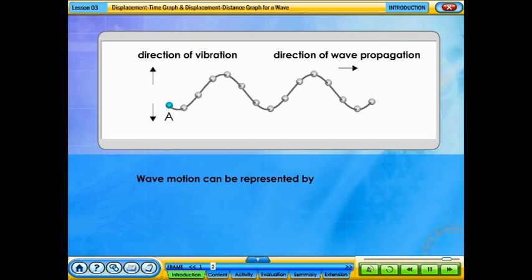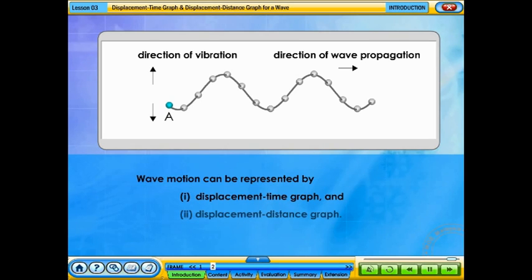The wave motions can be represented by displacement-time and displacement-distance graphs. Do you know what these graphs look like?